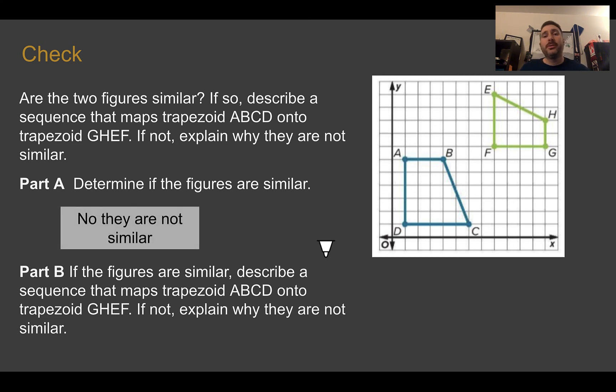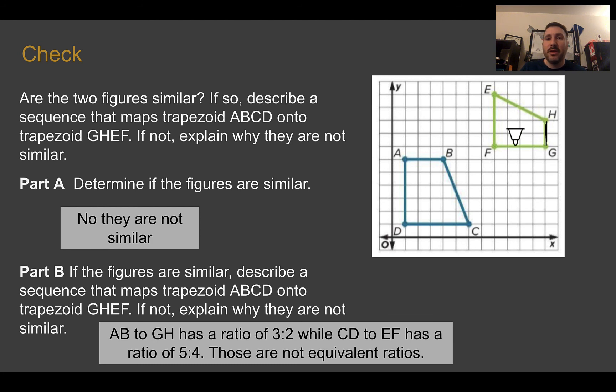Check your answer. You should have said no, they are not similar. Why not? If they were similar, everything would have an equal scale factor. I'm going to look at the little short side on the top here. I can tell that those two sides should be corresponding, based on where the diagonal is and how the shape seems to look. So A to B is 3 units long, where G to H is 2. So that ratio is 3 to 2. But if I look at the opposite side, C to D is 5 units long, and E to F is 4. Is 3 to 2 the same as 5 to 4? 6 to 4 is not the same as 5 to 4. They are not equal ratios. So a dilation did not occur, so they are not similar. Similar just means it's the same shape, but one is larger or smaller than the other.